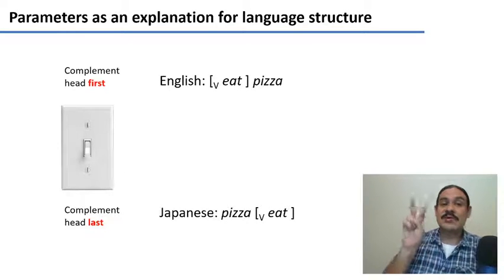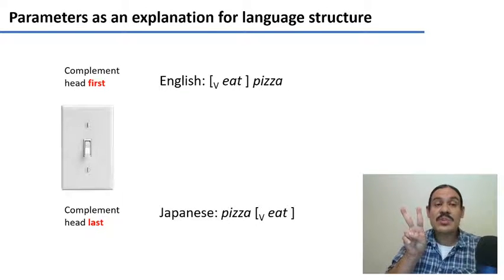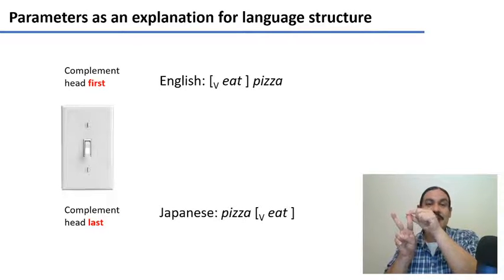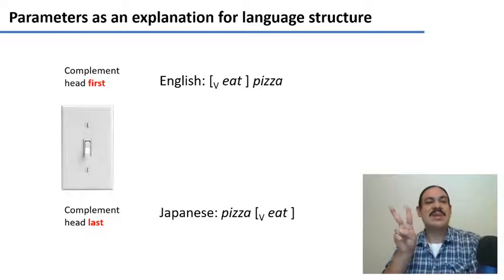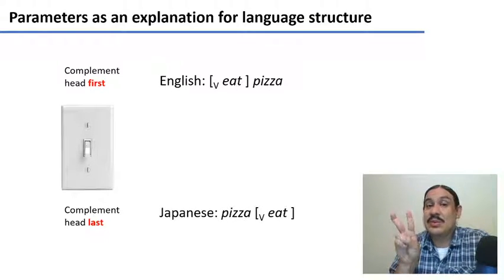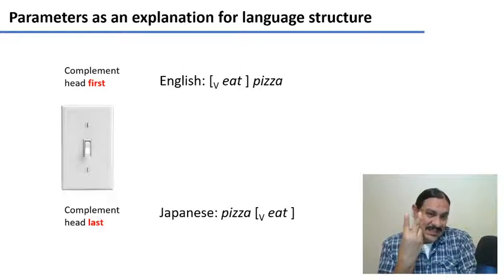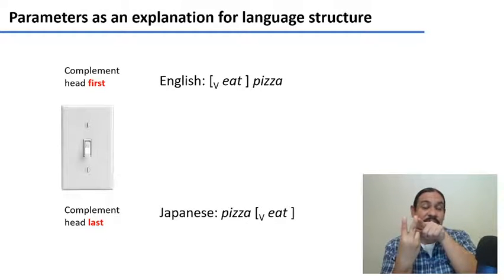For example, we looked at a parameter of how the complement and the head are going to be arranged. In some languages, you can have the head of a phrase first, like 'eat', which would be the head of a verbal phrase, and then its complement, the direct object 'pizza', second. So if your head goes first, you end up like English: eat pizza. You could flip it and have it like in Japanese, where the head goes last, and you would have the direct object first and then the head second: pizza eat.